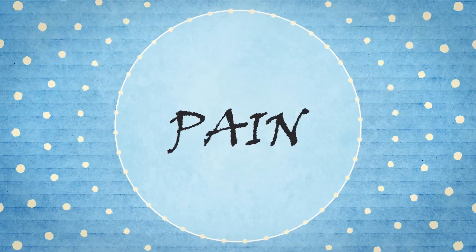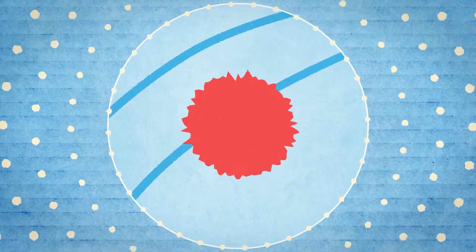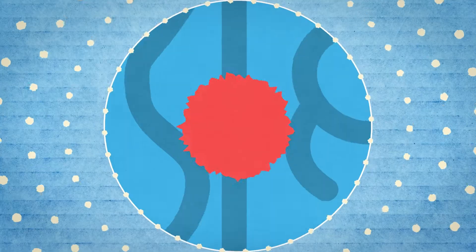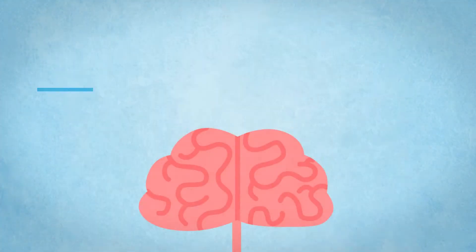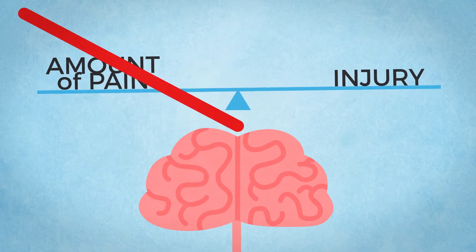For most of medical science history, pain was believed to be a straightforward message from nerves around the body telling the brain exactly how much pain to create, and the amount of pain would be proportionate to the injury. But this is very wrong.